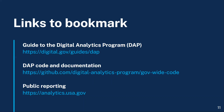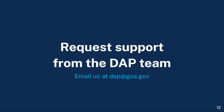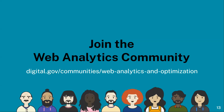For answers to frequently asked questions in the DAP guide, visit digital.gov/guides/DAP. For more detailed information on how to implement the DAP code, visit github.com/digital-analytics-program/gov-wide-code. To learn more about public data reporting, go to analytics.usa.gov. To request support from the DAP team, email us at dap@gsa.gov. Join the web analytics community at digital.gov/communities/web-analytics-and-optimization.